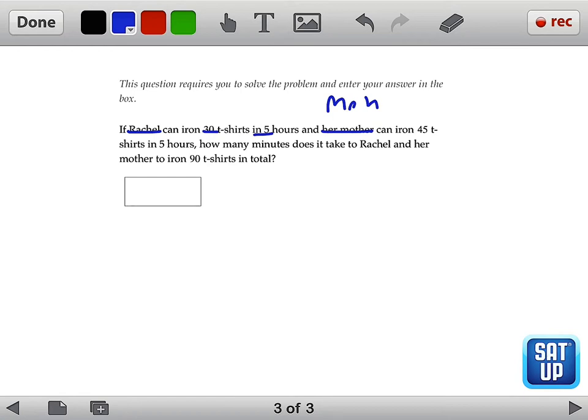So it seems like Rachel and mom are ironing t-shirts at different speeds. Let's look at how fast Rachel is able to iron. Now Rachel is able to iron 30 t-shirts in 5 hours.